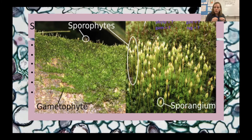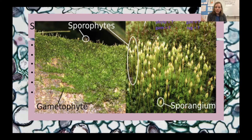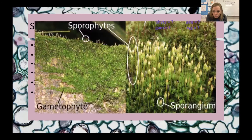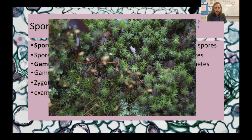In algae, this zygote was in water and divided by meiosis immediately. In moss, the egg is retained inside, and fertilization happens within the moss. Something in evolutionary time kept that zygote inside and allowed it to reproduce — that's where we get multicellularity. This diploid zygote grows into our new sporophyte, and from there the spores are produced again. This is called alternation of generations — the gametophyte here and the sporophyte there.